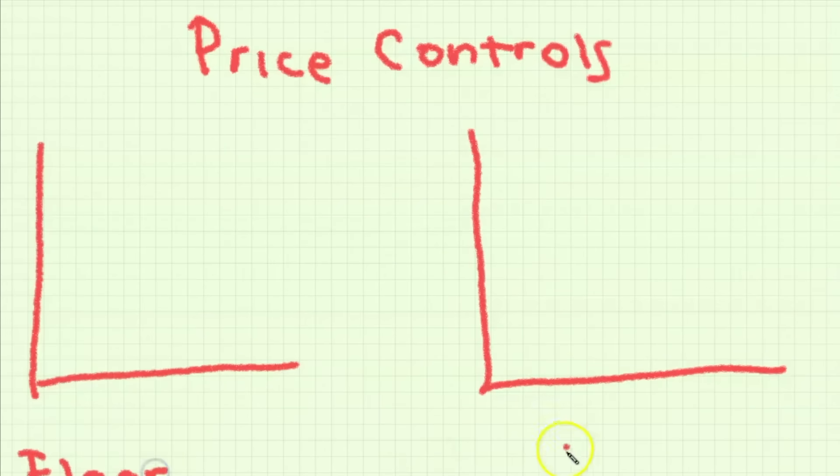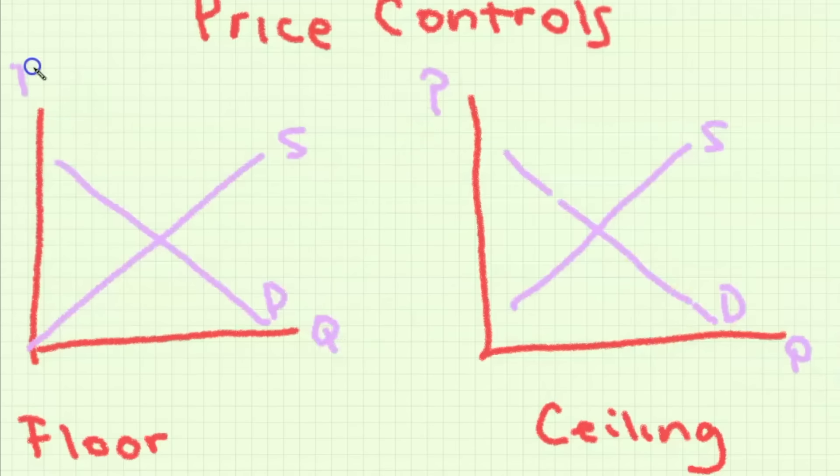Price controls on the other hand are also a form of government intervention but it's when the government sets a specific price either above or below the equilibrium. If this price is above the equilibrium then it is a price floor and if it is set below the equilibrium price then it is a price ceiling.